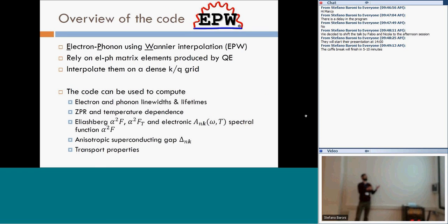The EPW software is an electron-phonon code that uses Wannier interpolation. We rely on electron-phonon matrix elements that are produced by Quantum Espresso. And the EPW code then interpolates them on a dense k-point and q-point mesh. To compute electron and phonon linewidths, it can be used to compute the polaron motion and renormalization. The temperature dependence of different quantities. It can be used to compute the Eliashberg function, superconducting properties, as well as some transport properties.